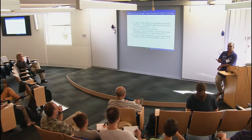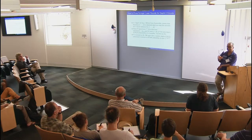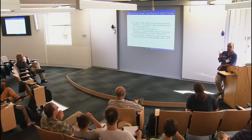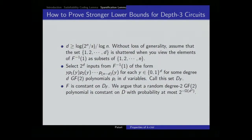One thing is that we selected this subset D_f, and the function f is constant on this set, and the KC-and-F is also constant on this set. What we argue is that if you take a random degree-2 polynomial, such a polynomial is constant on this kind of set with probability at most 2^(-D²). You take D_f — a particular set of inputs — and ask: what is the probability that a random degree-2 polynomial is constant on this set of inputs?